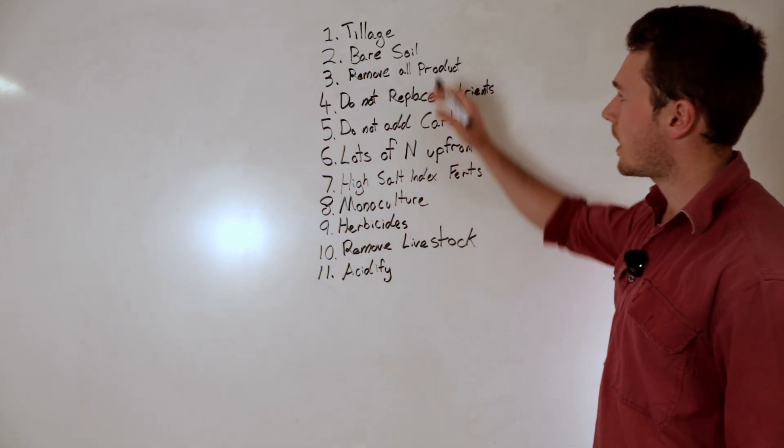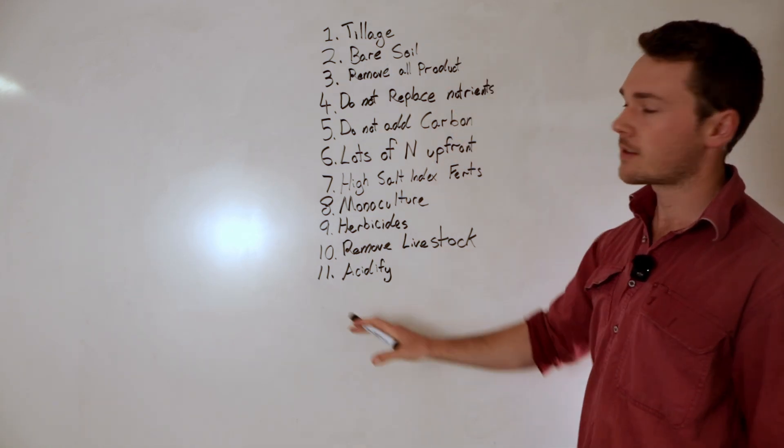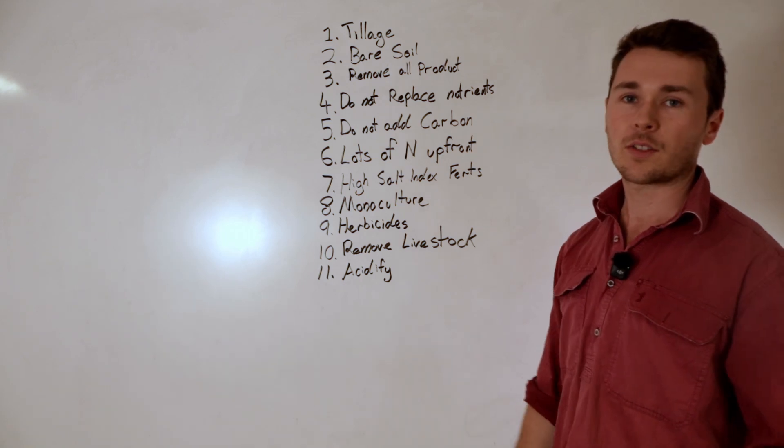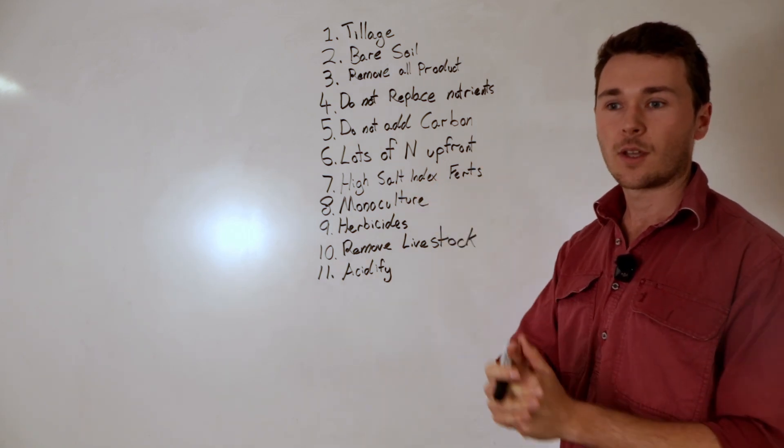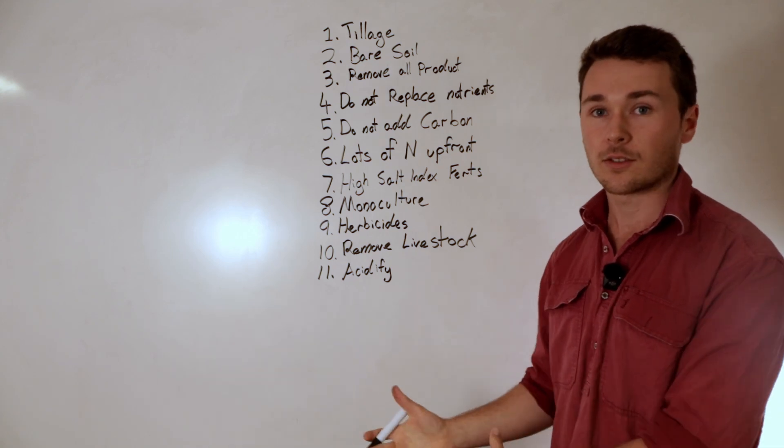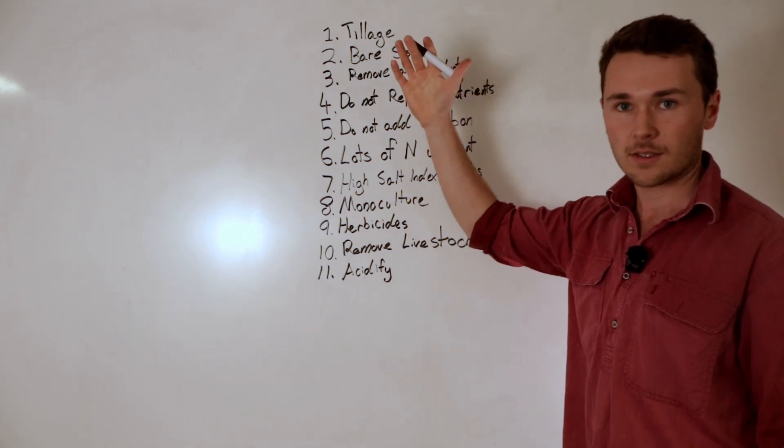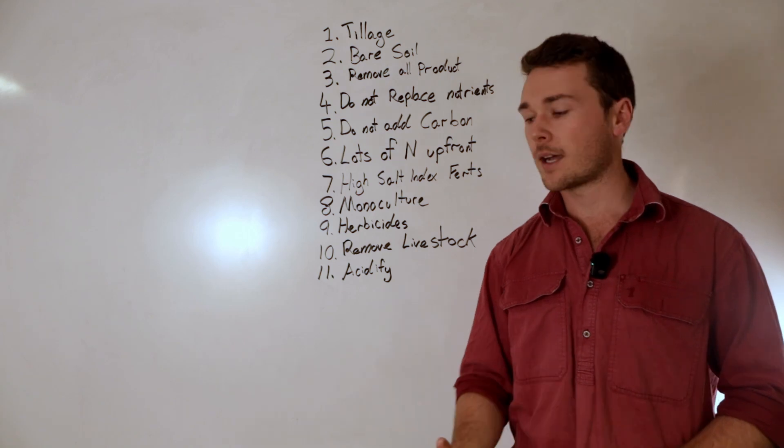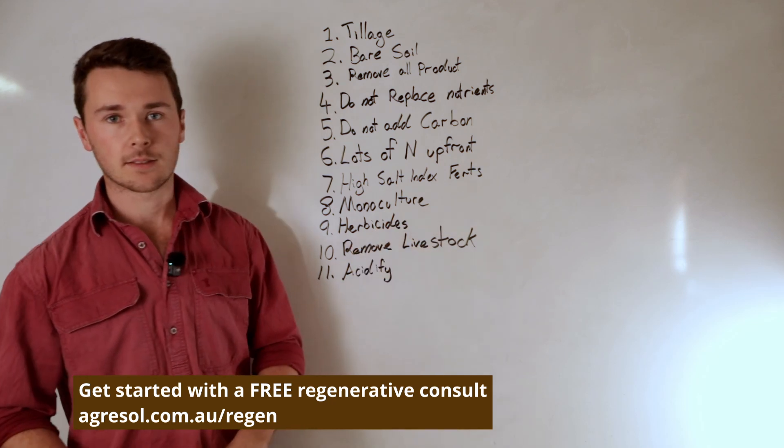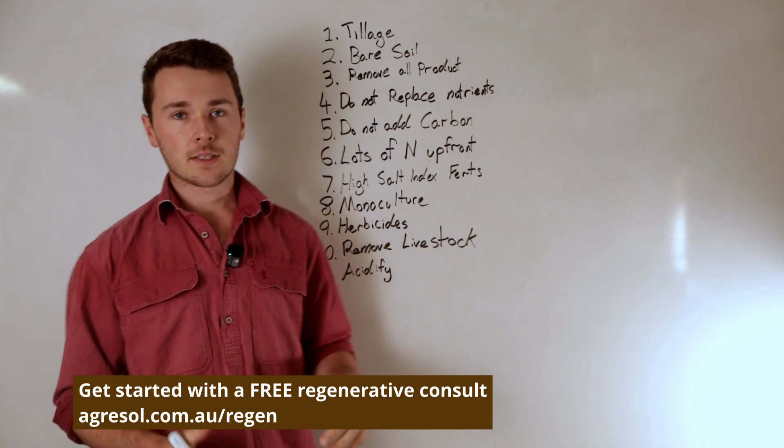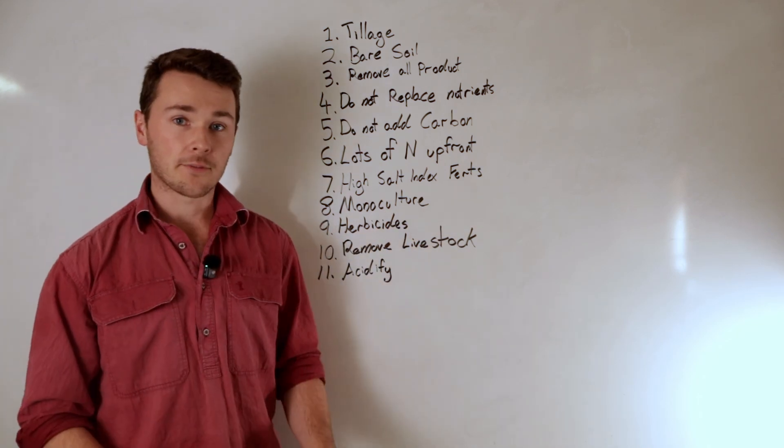If I was to manage a soil and my goal was to destroy it these are the type of things I'd be doing. Now obviously we don't actually want to be doing that and the whole purpose of this exercise is to discuss things that would actually destroy our soil so that we can do the inverse of this. So as we said at the start of the video Charlie Munger would often say invert. Always invert. So what are the inverse of these things? And then we can start trying to implement them.